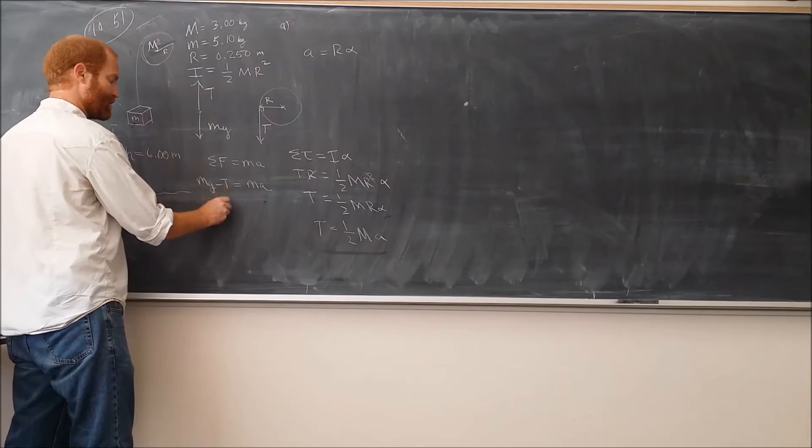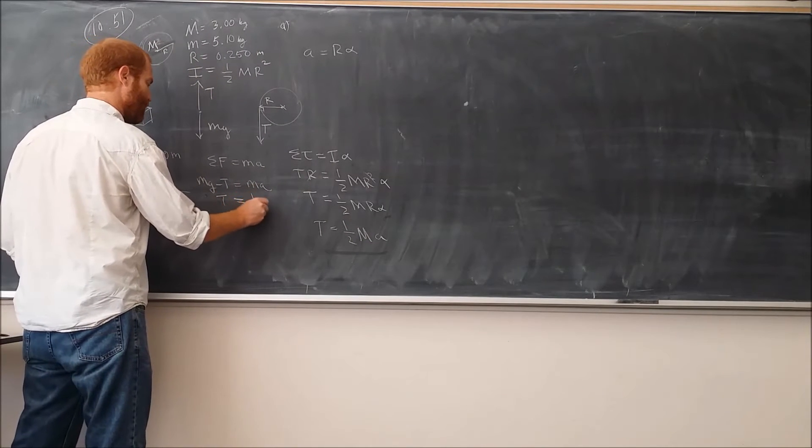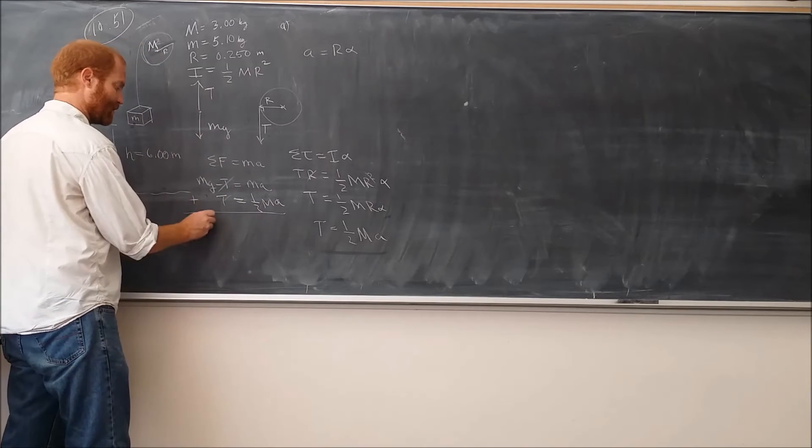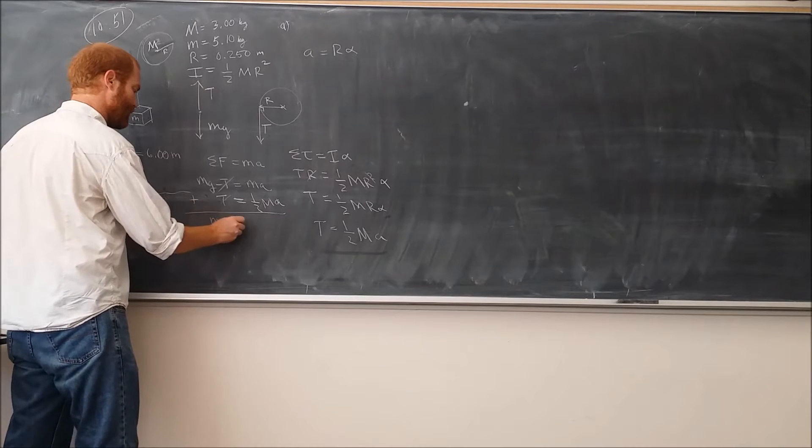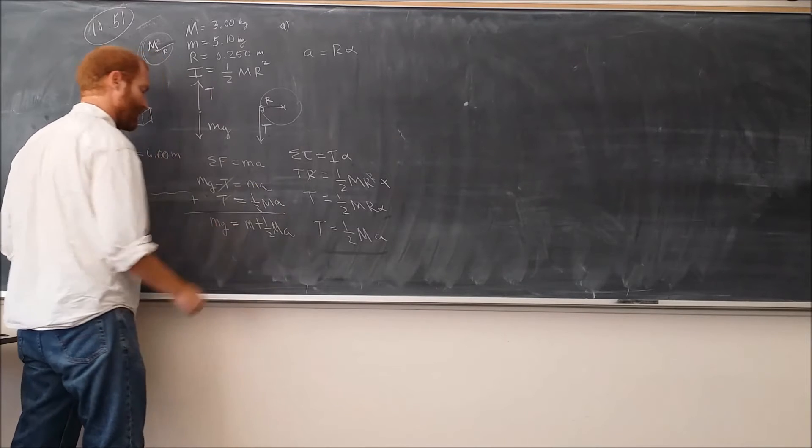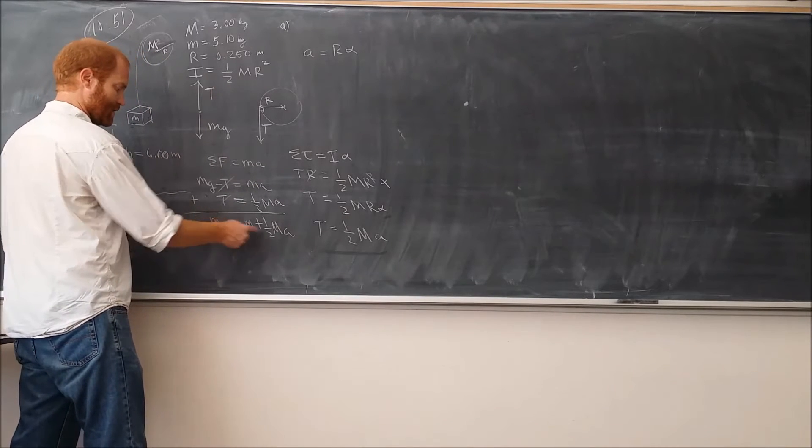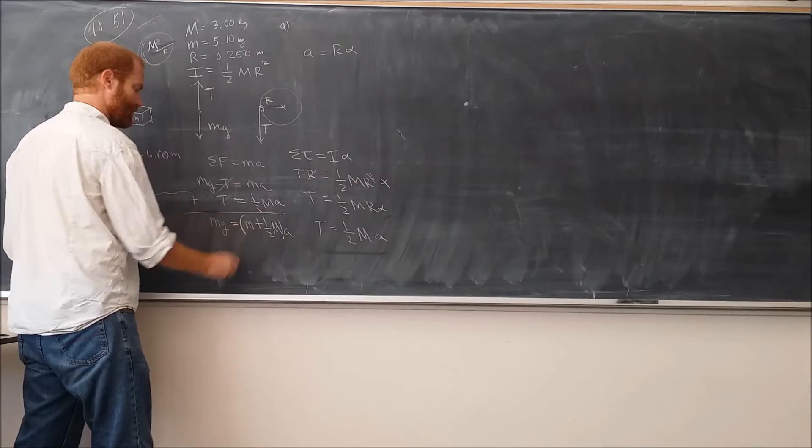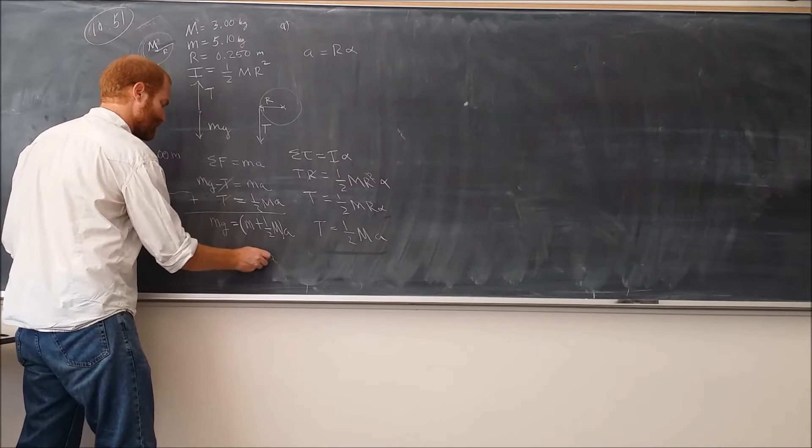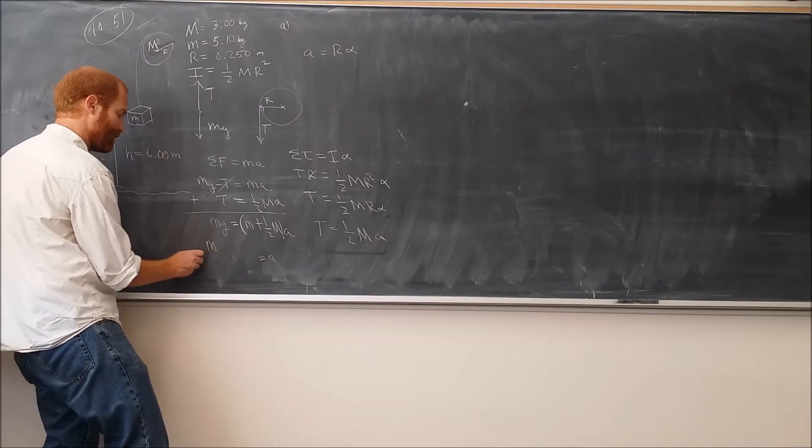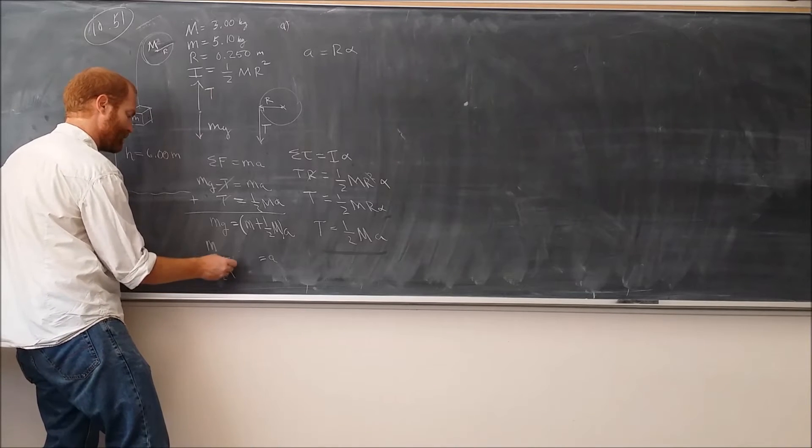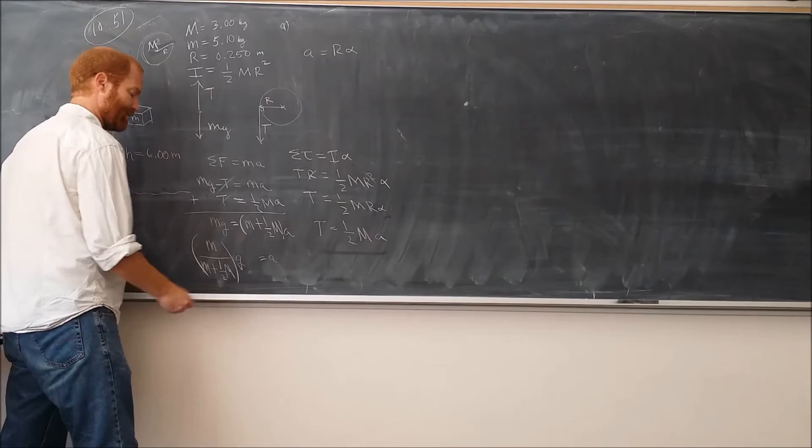Take this equation here, add it to this equation. Tensions cancel. We get little mg equals little m plus one-half M times a. And then we divide this over to this side to get that the acceleration of the system is little m over little m plus one-half big M times gravity.